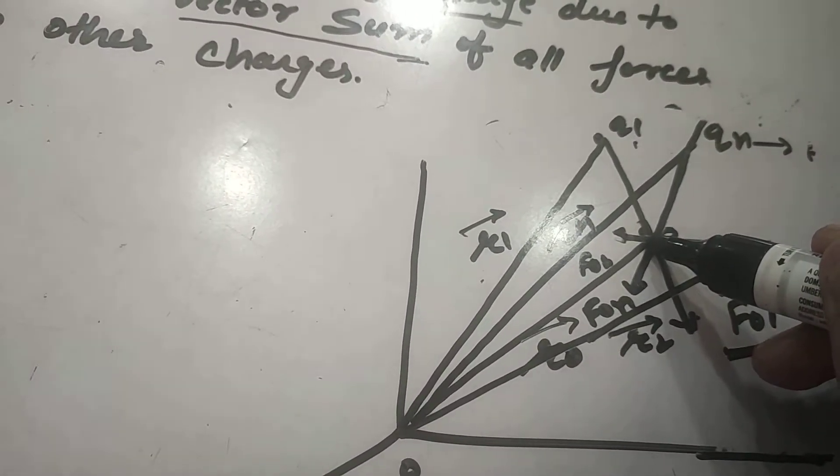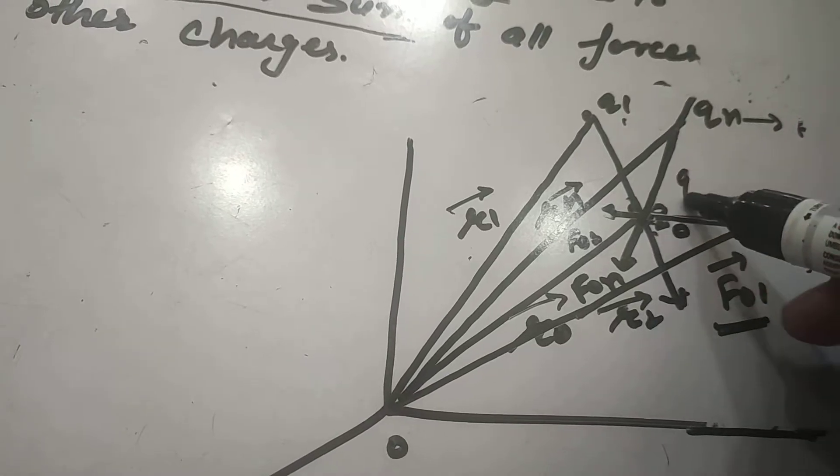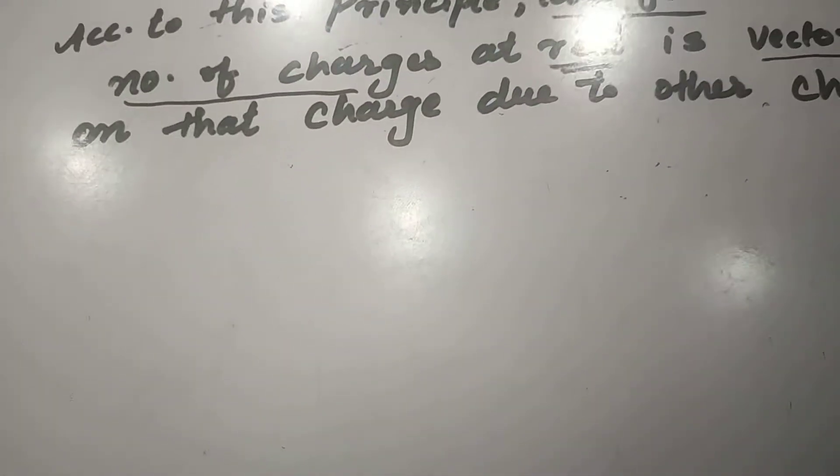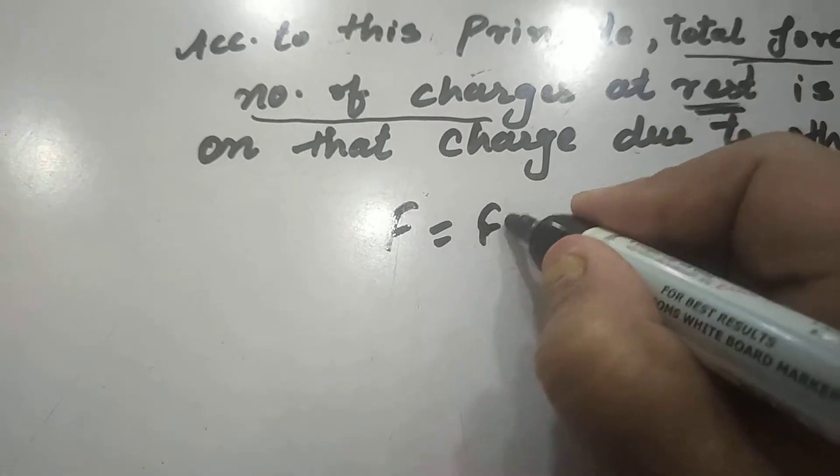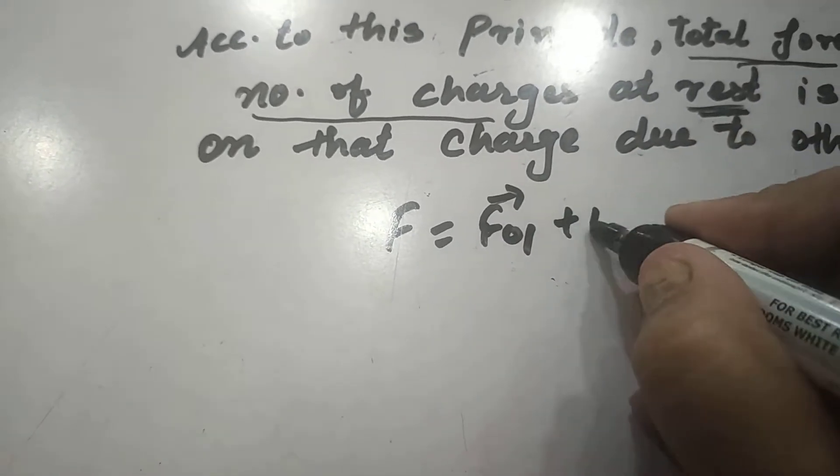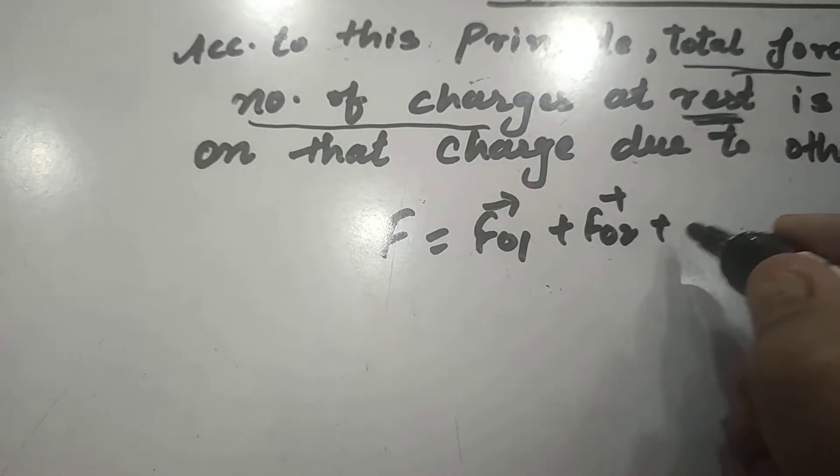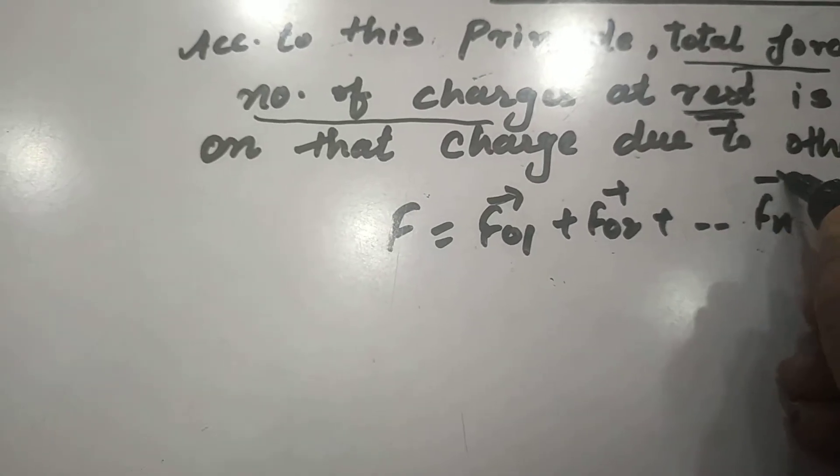Now various forces when added up give the net value of the force at that q naught. Mathematically we can write here as F is equal to f naught 1 vector plus f naught 2 vector plus so on f n vector.